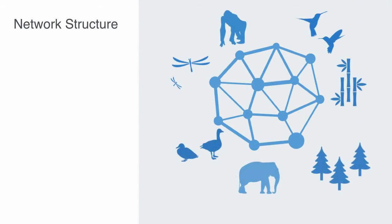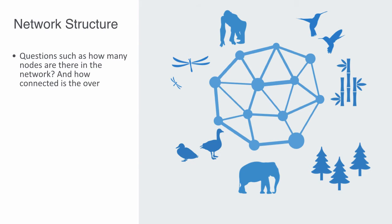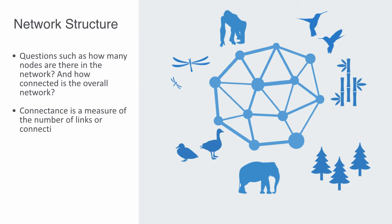Network structure describes patterns and structures within the overall ecological network. We ask questions such as: how many nodes are there, and how connected is the overall network? The overall level of connectivity in a network is a primary factor determining its nature within an ecosystem. This is called connectance — a measure of the number of links or connections between species expressed as a proportion of maximum connectance.